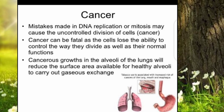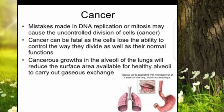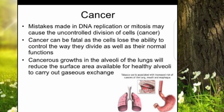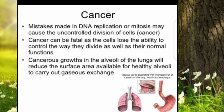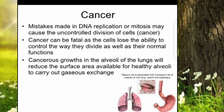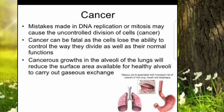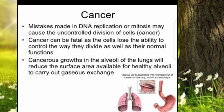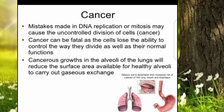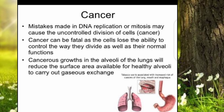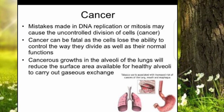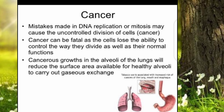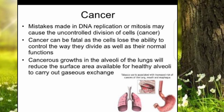A mistake made in DNA replication or mitosis may cause the uncontrolled division of cells, which is called a cancer cell. Cancer cells can be defined as cells that have lost the ability to control how they divide, as well as their normal cell functions. For example, cancer growth in the alveoli of the lungs will reduce the surface area available for healthy alveoli to carry out gaseous exchange.